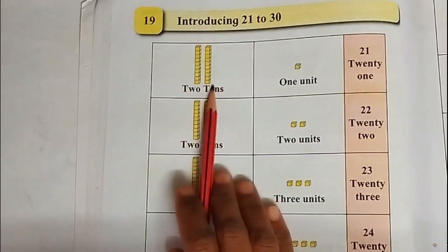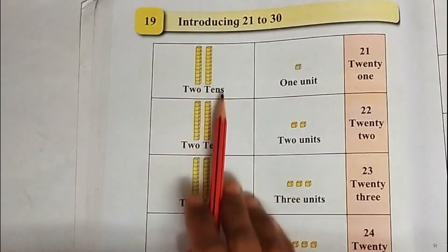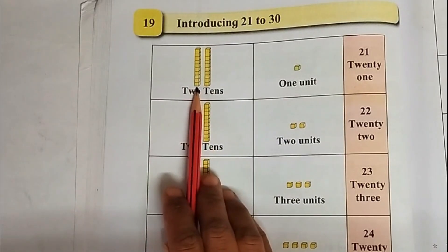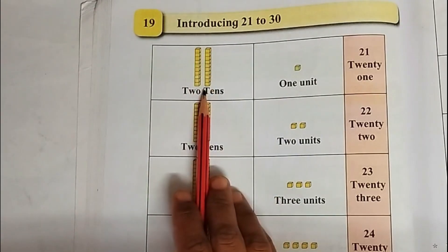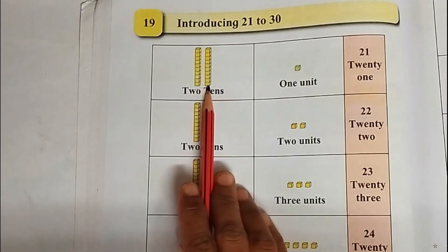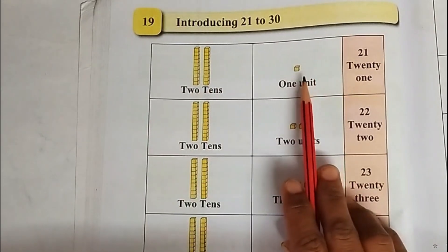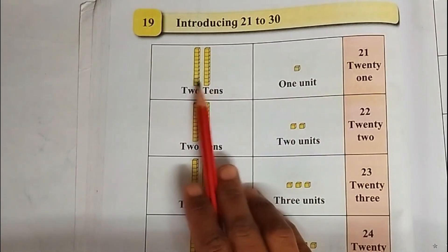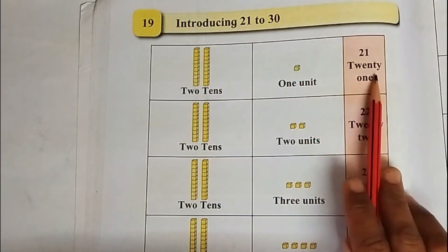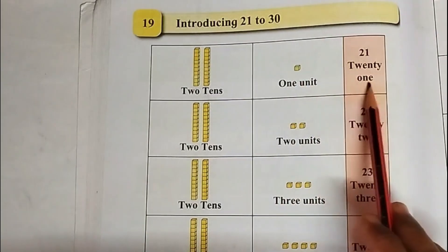We will be starting from the first column. There are 2 blocks — 2 lines of blocks, 1 block each. In the first line there are 10 blocks and other 10 blocks, so this is 1 tenth and 2 tenths. This gives us 1 unit, so 20 and 1 = 21. T-W-E-N-T-Y (20) O-N-E (1): 21.